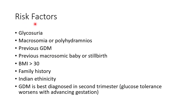Now let us see about the risk factors for developing gestational diabetes mellitus. These include glycosuria, macrosomia or polyhydramnios, previous gestational diabetes mellitus, previous macrosomic baby or stillbirth, body mass index greater than 30, family history of diabetes mellitus, and Indian ethnicity. Gestational diabetes mellitus is best diagnosed in the 2nd trimester.